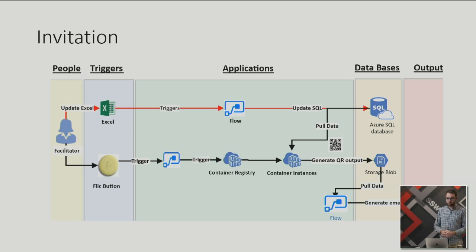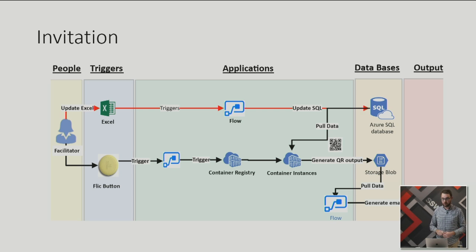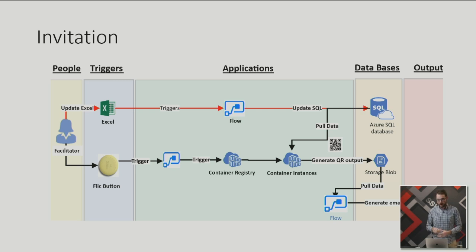For the invitation section: the facilitator fills in an Excel spreadsheet on OneDrive with the customer's name and email. As soon as they save it on OneDrive, that's a trigger in the Flow, which pulls the information from the Excel spreadsheet and puts it into the SQL database. That's all that top section does.